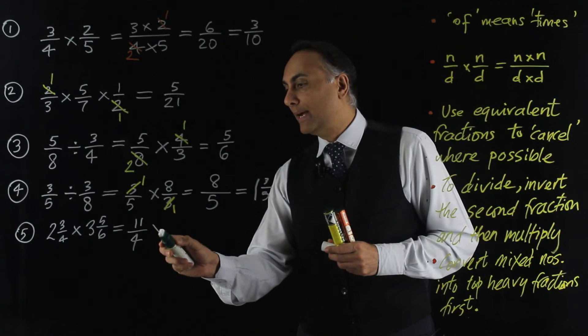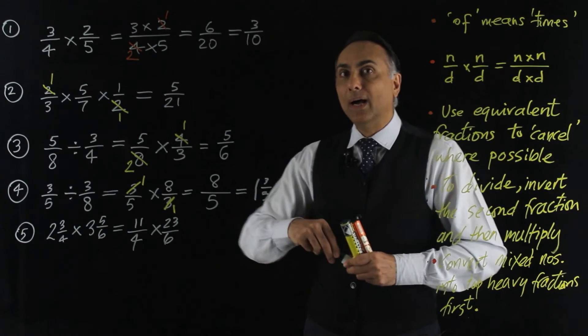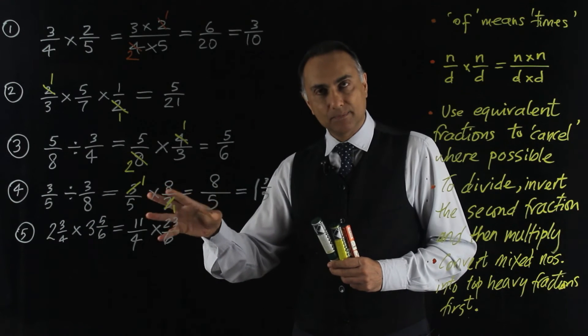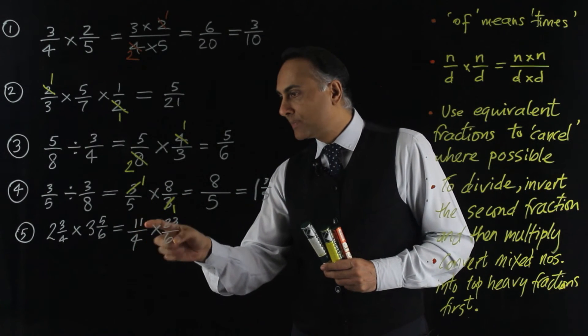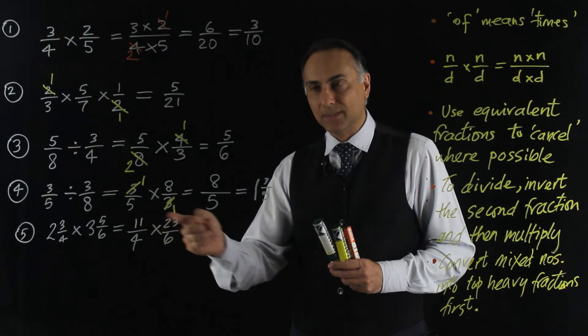So multiplied by 23 sixths. Now I look to see if I can cancel any common factors between numerators and denominators. Now 11 is prime. 23 is prime. So they don't have any factors other than 1 and themselves.